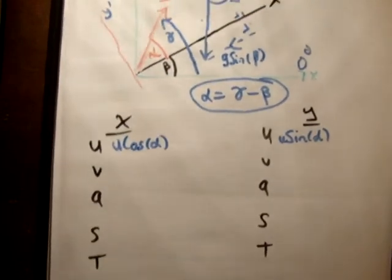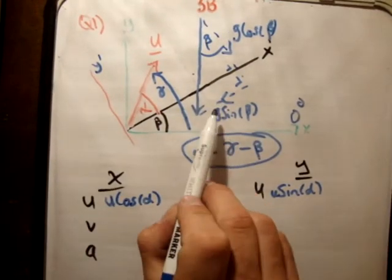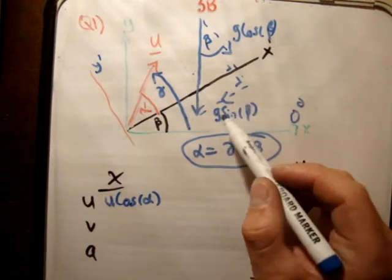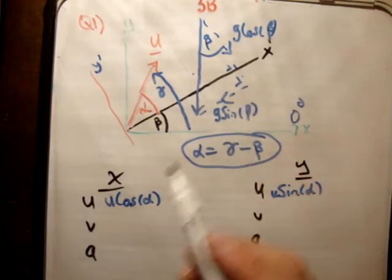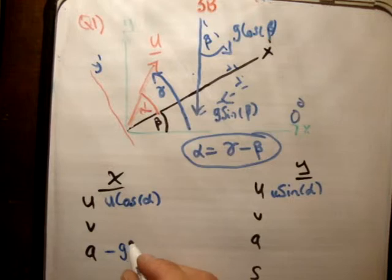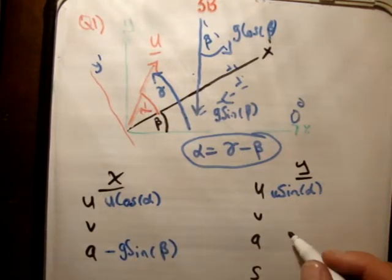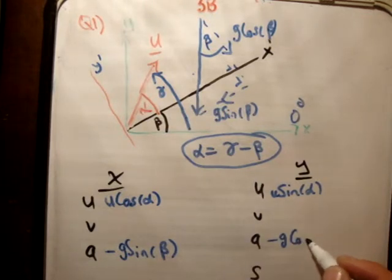What else do we know? The acceleration in the x-direction is equal to g sine beta. And I'm always going to say it's actually minus g sine beta, because look, it's in the negative x-direction. So it's minus g sine beta. And this is minus g cos beta.